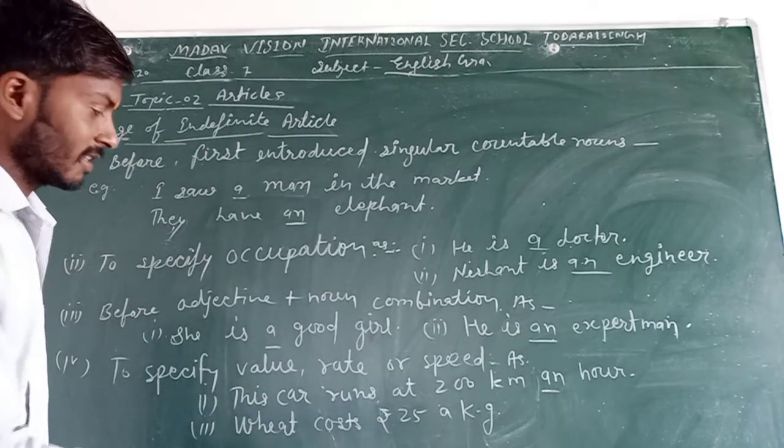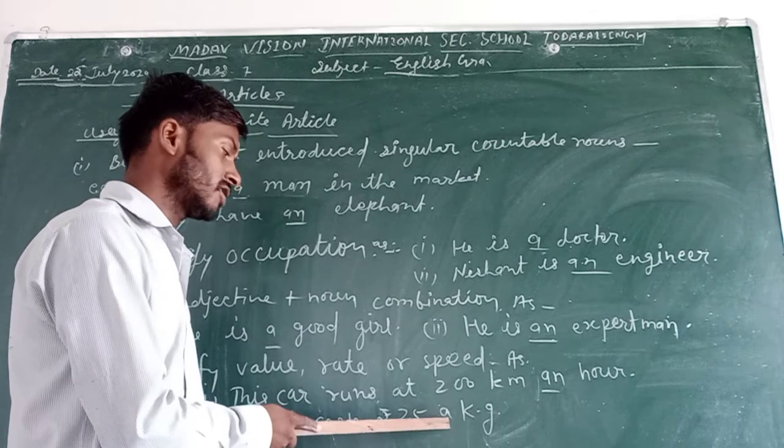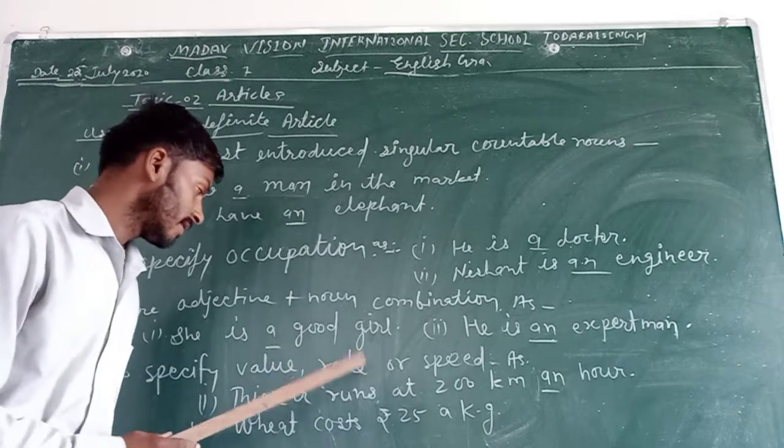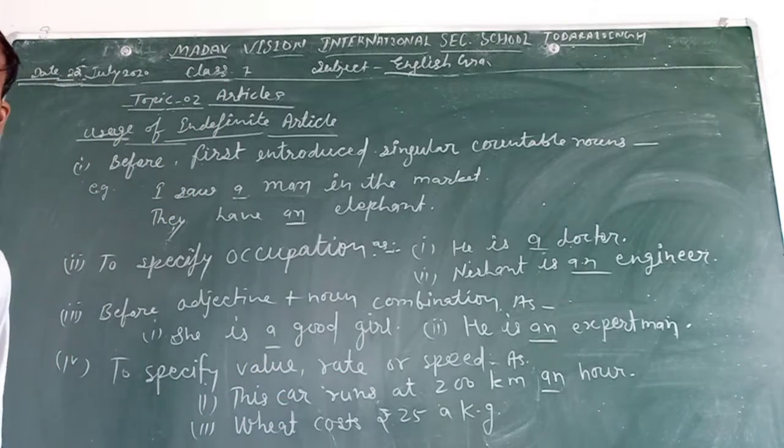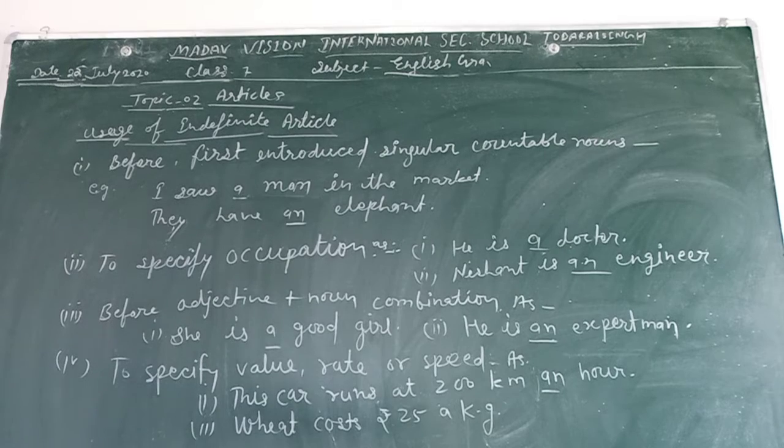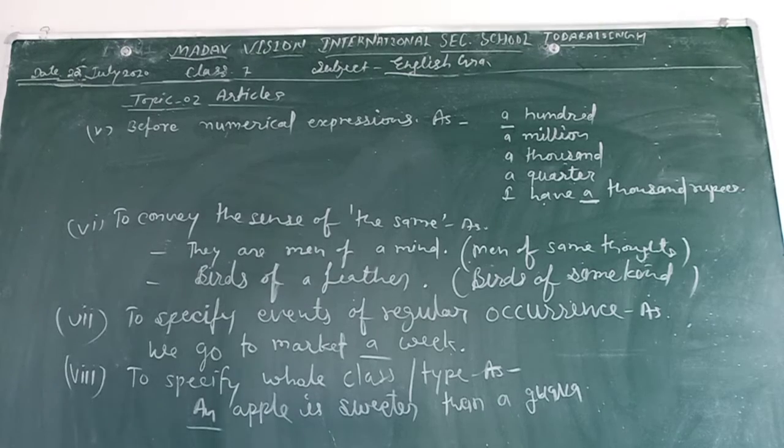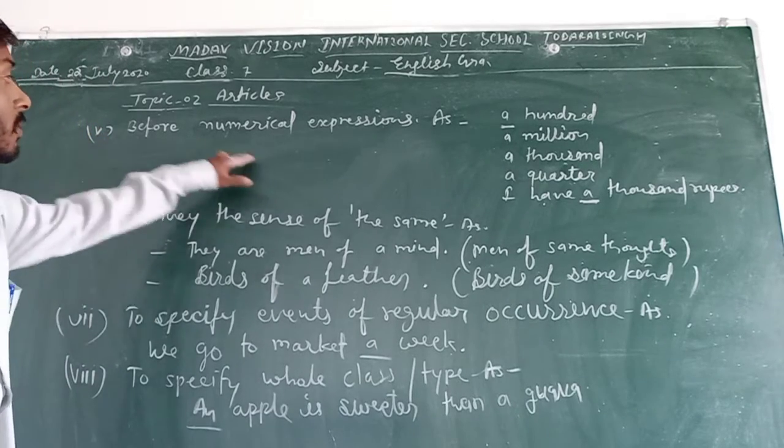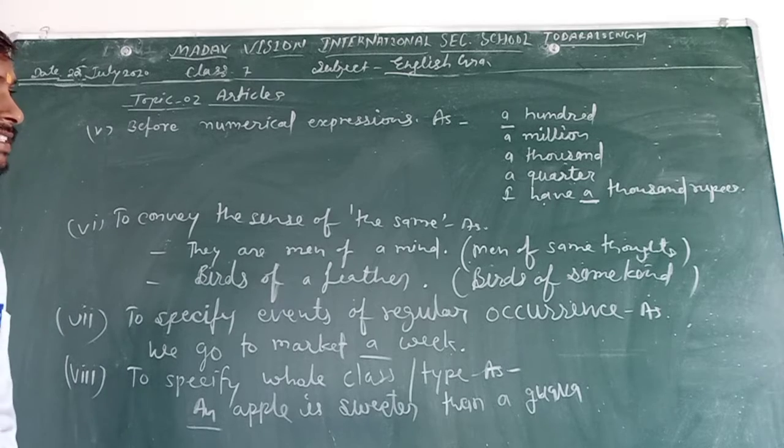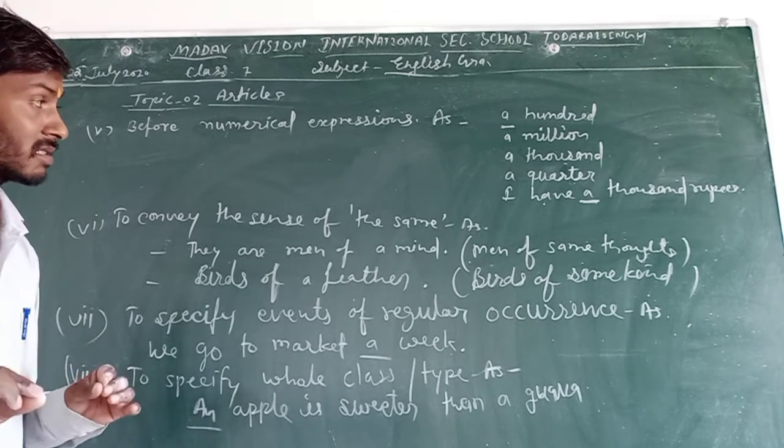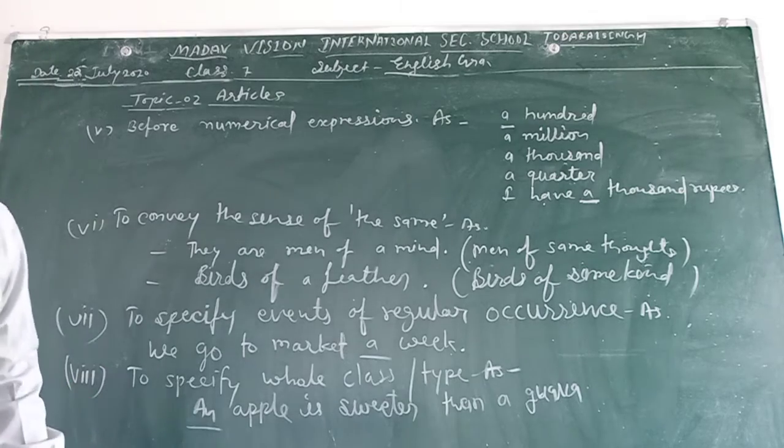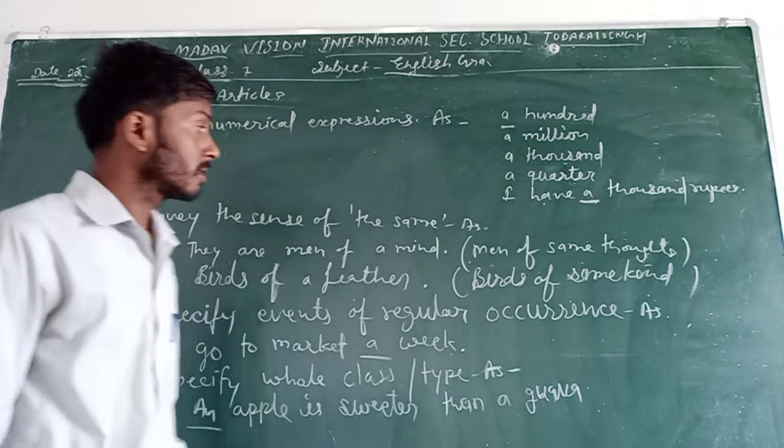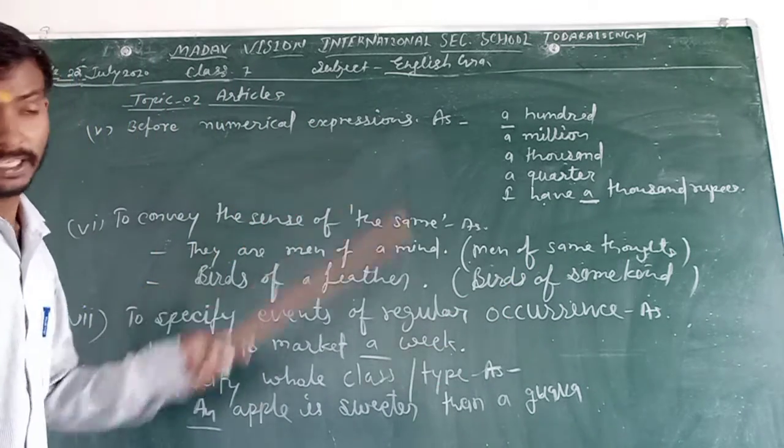What cost 25 acres. A is used to specify value. We call numerical expressions, as a hundred, a million, a thousand, a quarter. We have a thousand rupees. Here A is used to express numerical expressions.